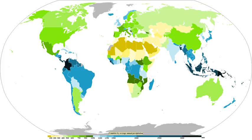Coalescence occurs when water droplets fuse to create larger water droplets, or when water droplets freeze onto an ice crystal, which is known as the Bergeron process. The fall rate of very small droplets is negligible, hence clouds do not fall out of the sky. Precipitation will only occur when these coalesce into larger drops. When air turbulence occurs, water droplets collide, producing larger droplets. As these larger water droplets descend, coalescence continues, so that drops become heavy enough to overcome air resistance and fall as rain. Raindrops have sizes ranging from 0.1 mm to 9 mm mean diameter, above which they tend to break up.